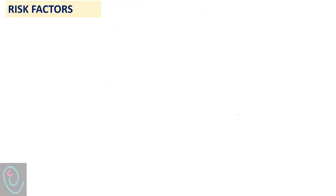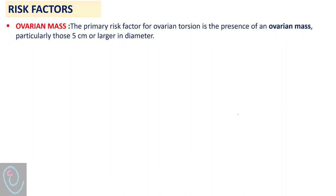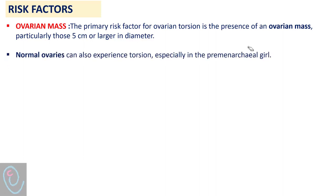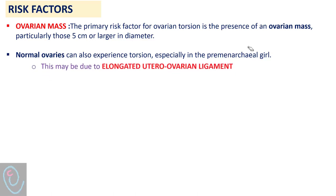Regarding risk factors, an ovarian mass is a primary factor for ovarian torsion, particularly when it is 5 cm or larger in diameter. However, normal ovaries can also experience torsion, particularly in pre-menarchal girls. This may be due to elongated utero-ovarian ligaments.